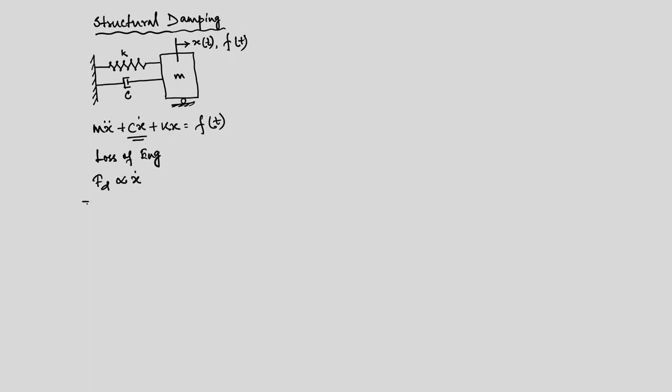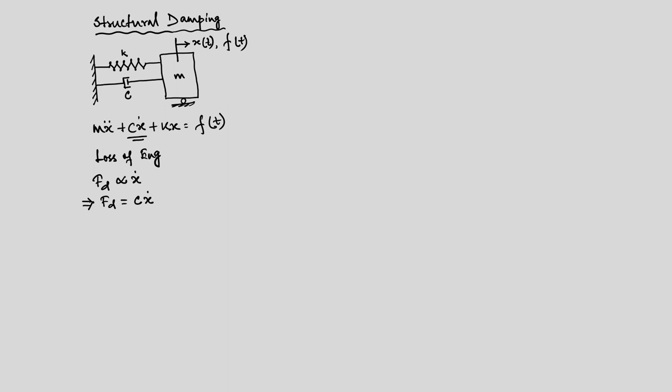The damping force Fd equals some damping constant times x dot. In the last class we solved some examples where we defined damping with respect to certain velocity. Today we are going to see how damping plays a crucial role in structural dynamics and what are the different properties of this damping. We are going to stick to the viscous damping model.